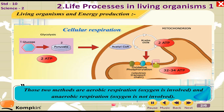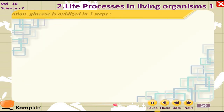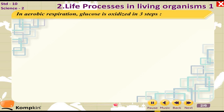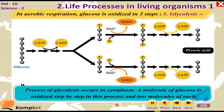Cellular respiration occurs in living organisms by two methods: aerobic respiration, in which oxygen is involved, and anaerobic respiration, in which oxygen is not involved. In aerobic respiration, glucose is oxidized in three steps. The first step is glycolysis, which occurs in the cytoplasm.